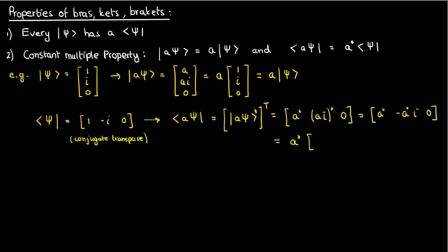I can take the conjugate of a outside the vector to get the conjugate of a times 1, negative i, and 0, which is just the conjugate of a times the bra form of psi, which verifies our constant multiple properties.